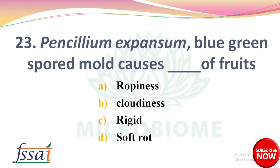Next: Penicillium expansum, blue-green spot mold, causes dash of fruits — options: ropiness, cloudiness, rigid, soft rot. The right answer is option D, soft rot.